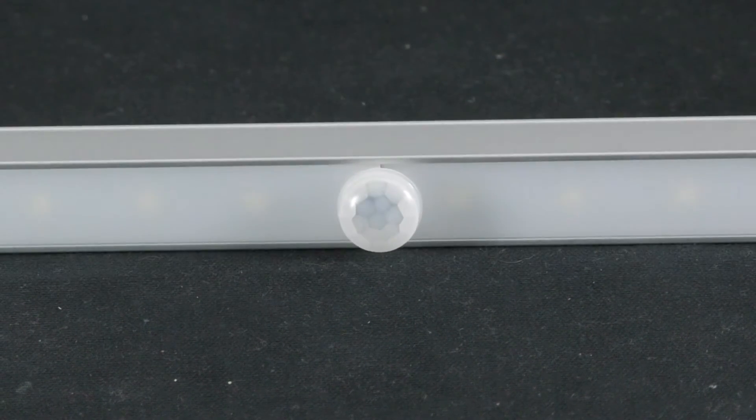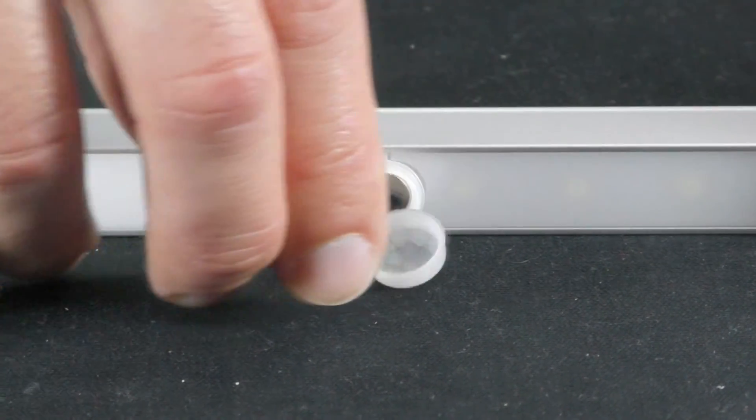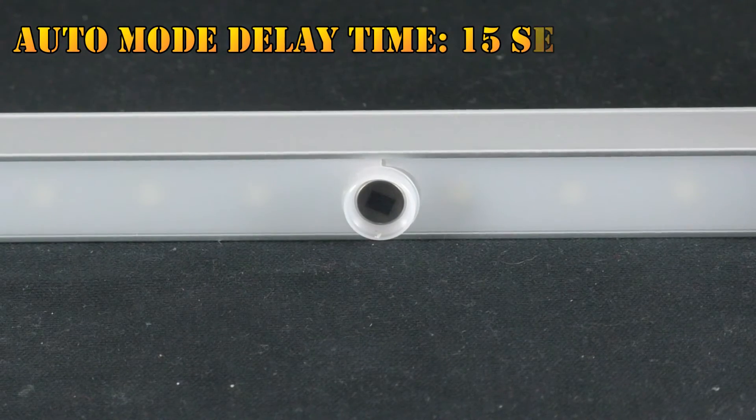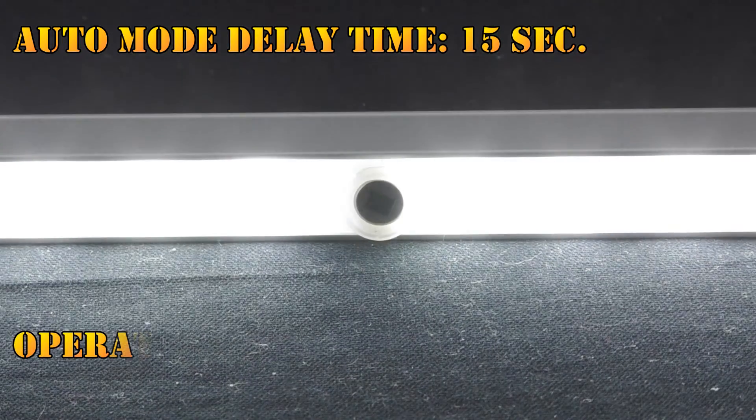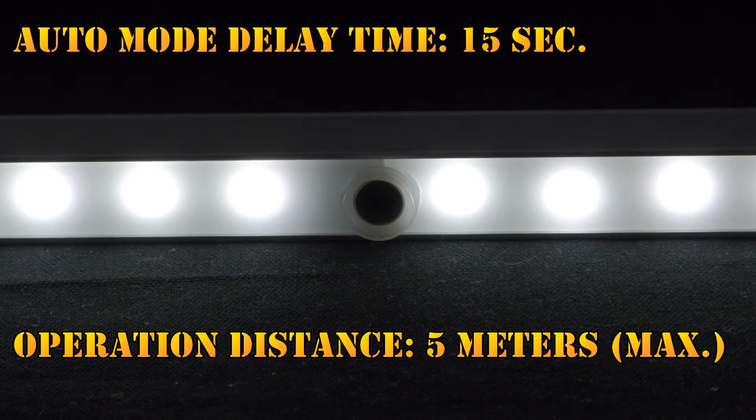At the front of the bar, there is some sort of a plastic cup which actually covers a sensor that controls the auto mode. When the sensor identifies a movement in front of it, the bar will turn on and the delay time will be about 15 seconds. The sensor is supposed to trace movement of up to 3 to 5 meters from the bar, and the detecting angle is up to 140 degrees.